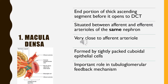Before opening to the distal convoluted tubule, the lining epithelial cells of the thick ascending limb of the loop of Henle show some histological peculiarities. These modified epithelial cells of the thick ascending limb constitute the macula densa. It is situated between the afferent and efferent arterioles of the same nephron, lying closer to the afferent arteriole. Since it is formed by tightly packed cuboidal epithelial cells, it gives a dense appearance — hence the term macula densa.